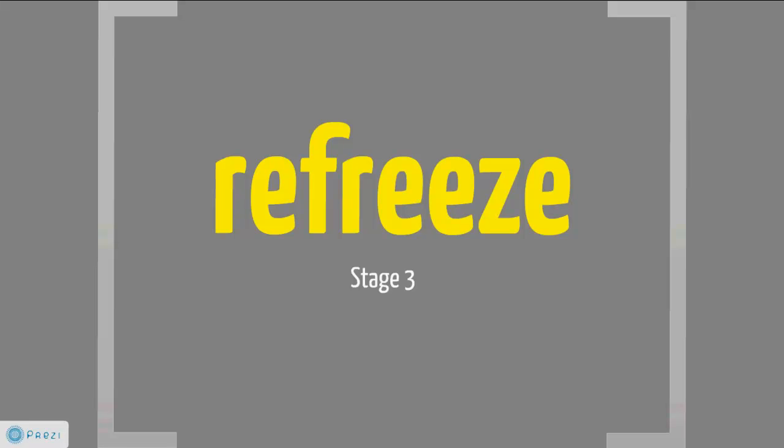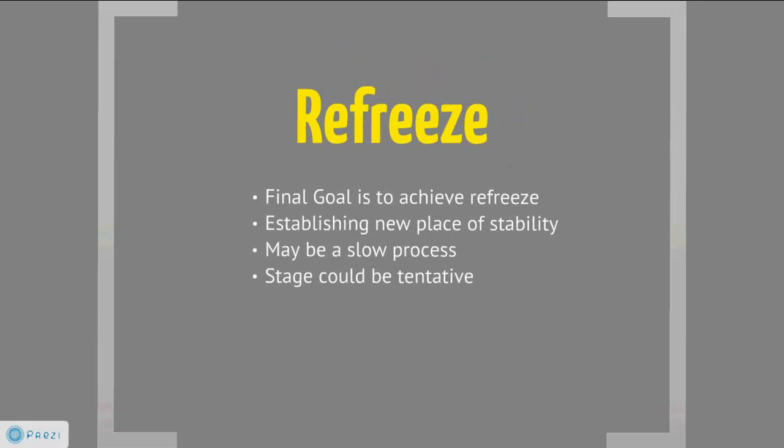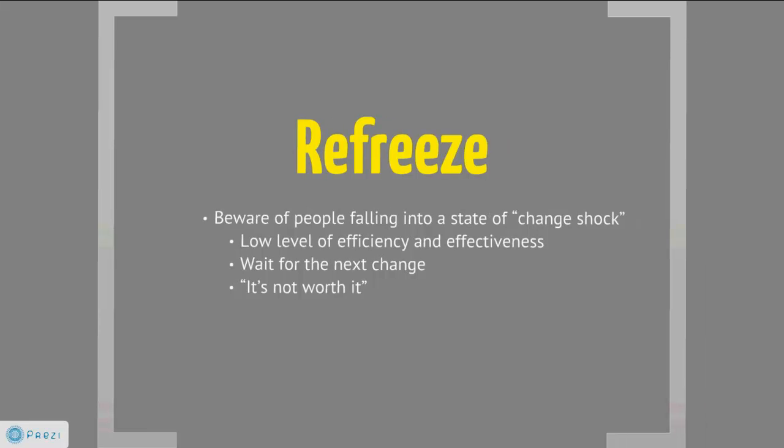Stage 3 is Refreeze. Kurt Lewin refers to this stage as freezing, although many people refer to it as refreezing. This stage is about establishing stability once the changes have been made. The changes are accepted and should become the new norm. People form new relationships and become comfortable with their routines, though this can take time, and there might be hesitation and reluctance to conform. Beware of people falling into a state of change shock — many wonder how many more times there will be a new change implemented and whether the work and effort is even worth it, which may lead to discouraged and ineffective workers.